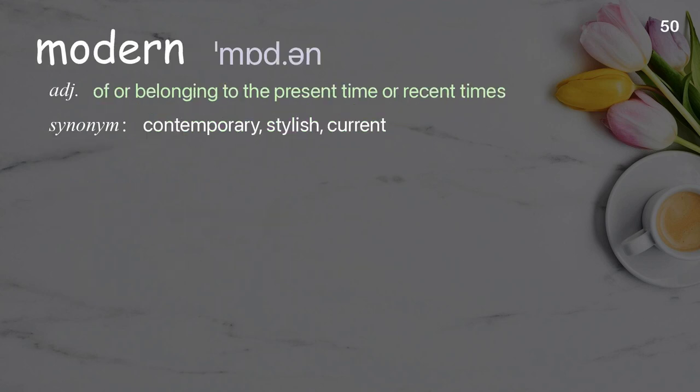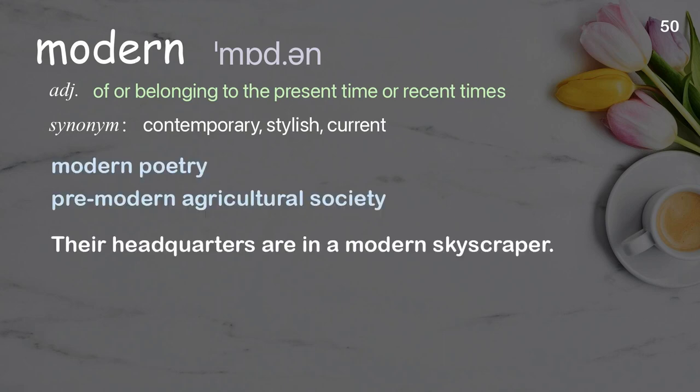Modern: of or belonging to the present time or recent times. Examples: modern poetry; pre-modern agricultural society. Their headquarters are in a modern skyscraper.